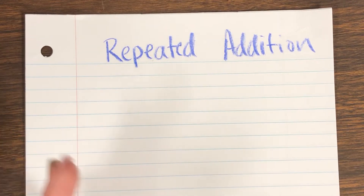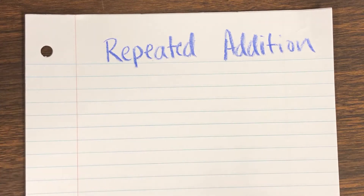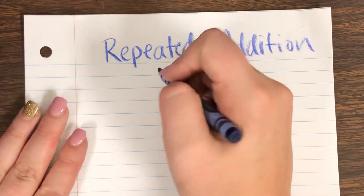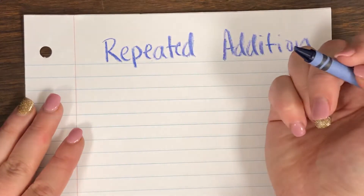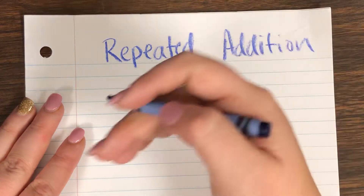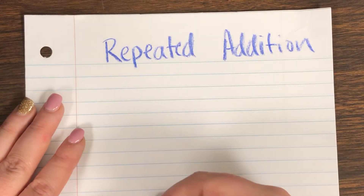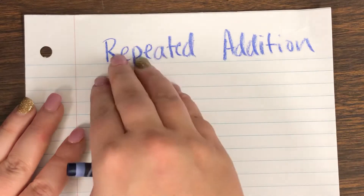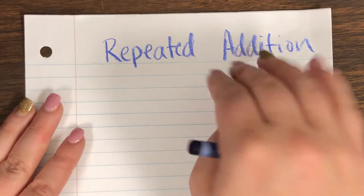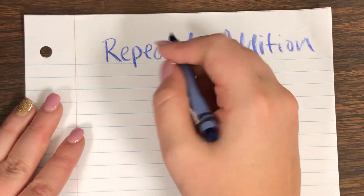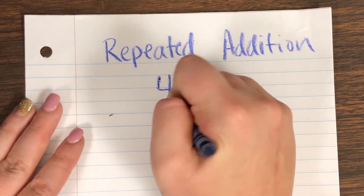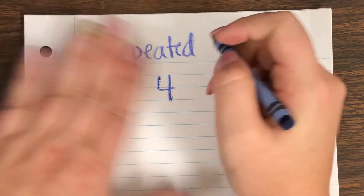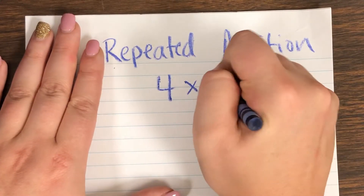Repeated addition goes hand in hand with our equal groups. We already know how to do equal groups, so we're going to use that strategy and then figure out the repeated addition from that strategy. It's really kind of two strategies put together today — equal groups and repeated addition. Just keep that in mind as I'm drawing, because you would need to draw the groups as well.